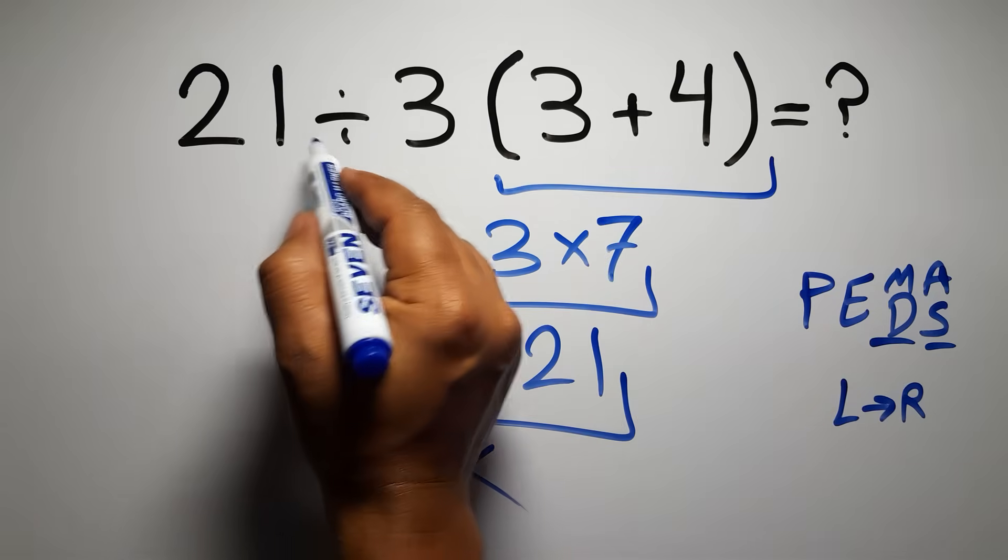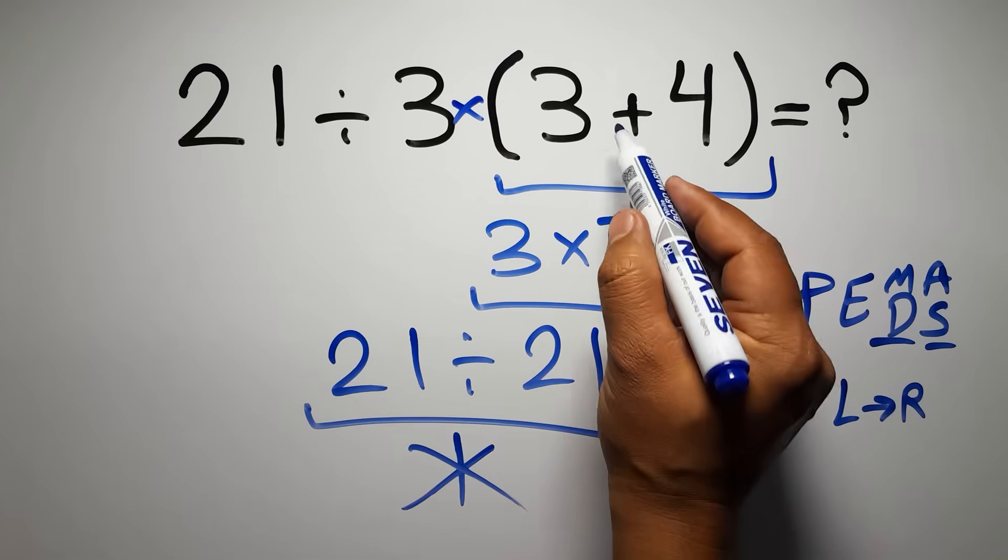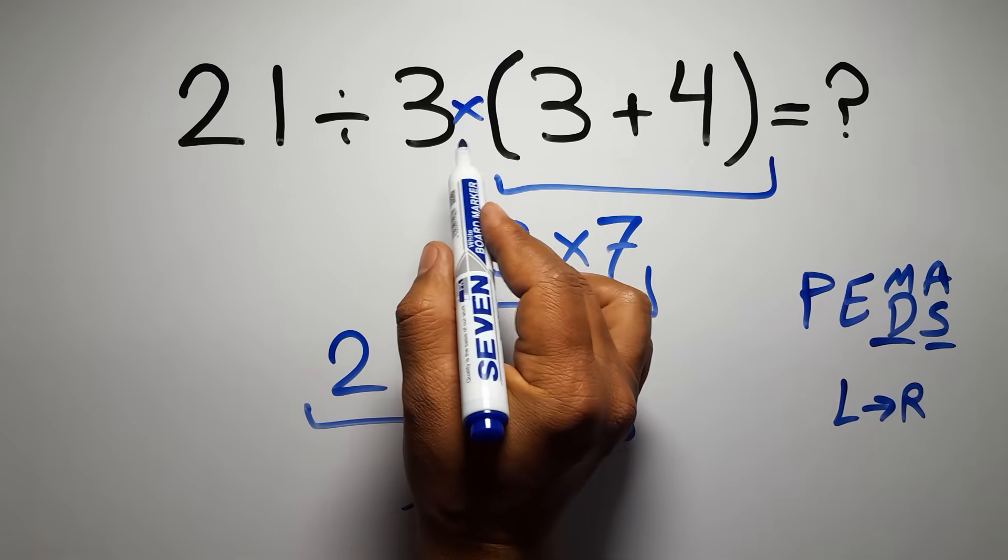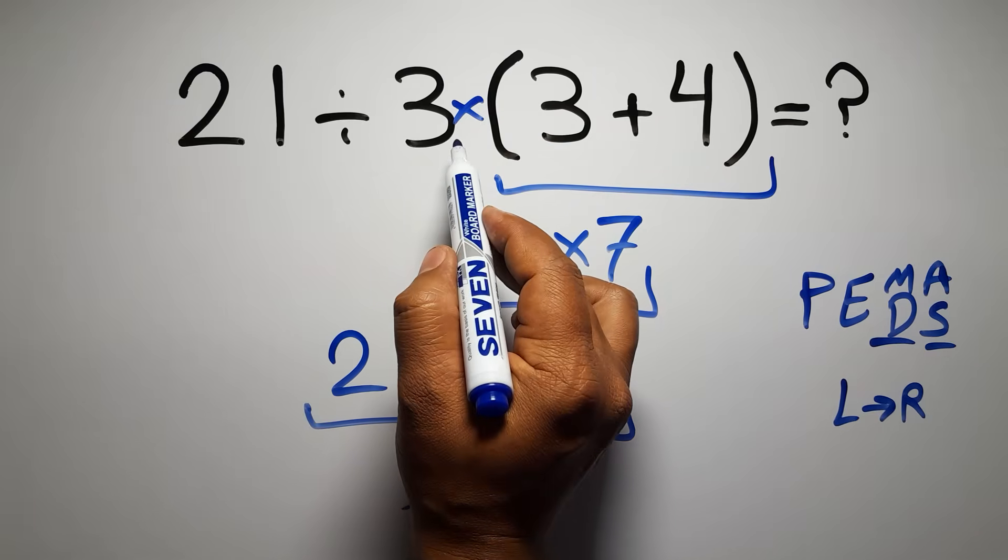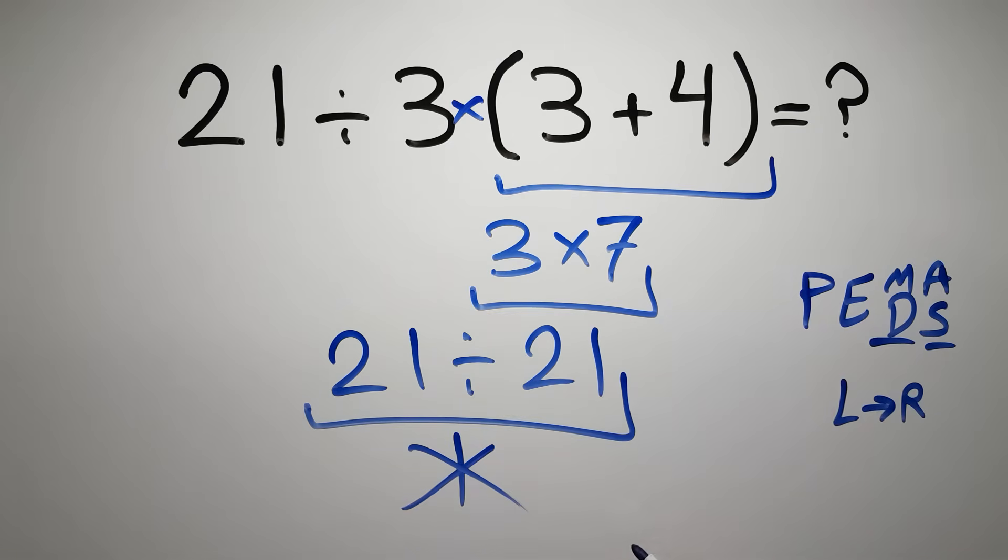In this expression, we have one division, one multiplication, and one parentheses. Inside these parentheses, we have one addition. Here we have a multiplication, because in mathematics, when a number is placed next to parentheses, it means multiplication, and we usually don't write the multiplication sign for brevity.